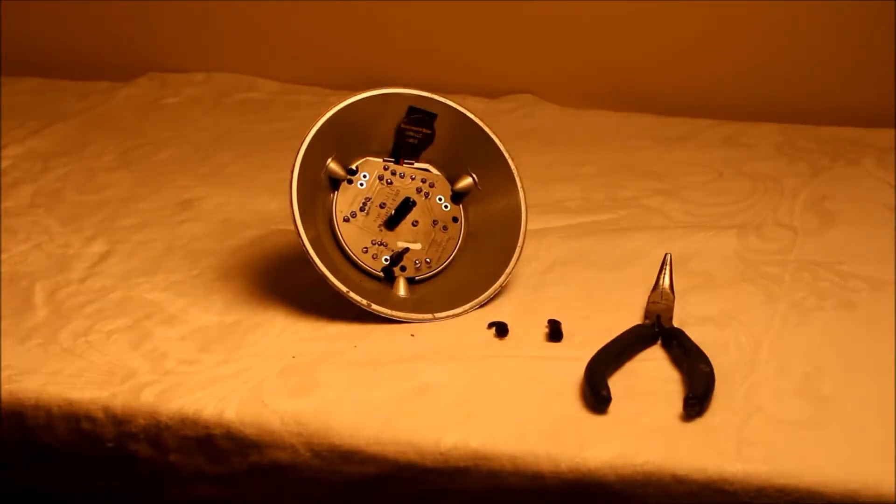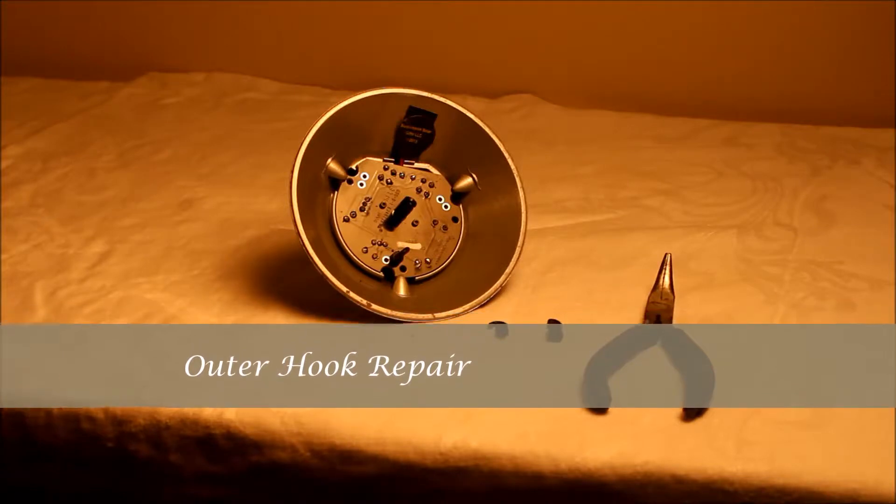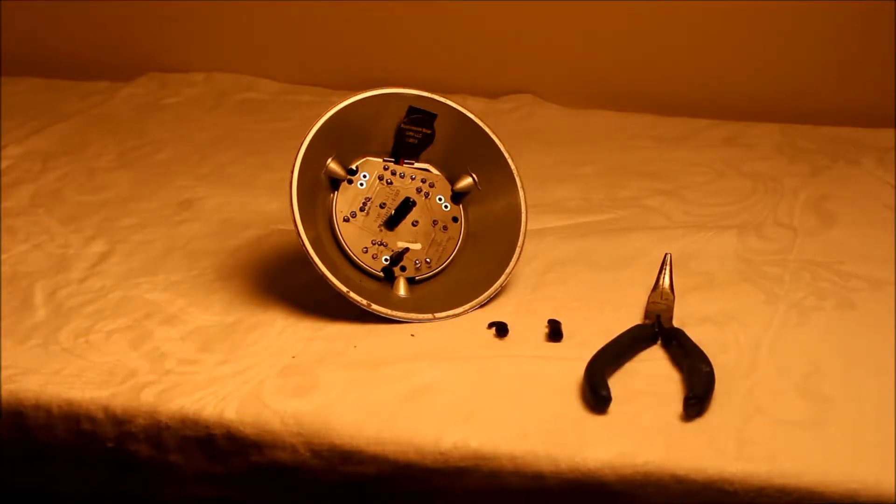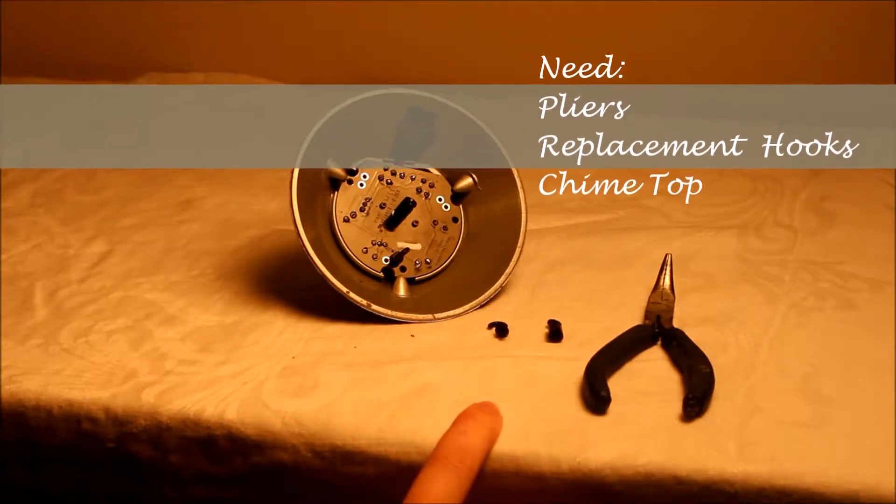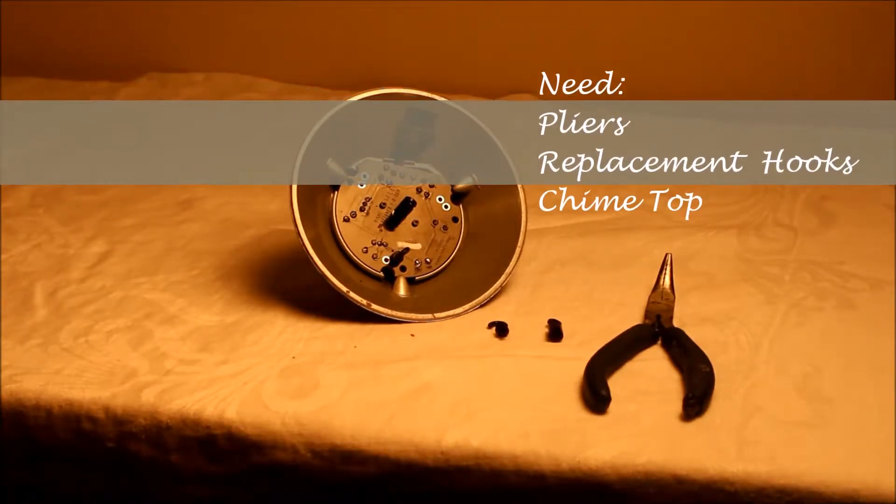In this video we will replace the outer hook of a Sunblossom Solar Gift. In order to do this you will need a set of pliers, the hooks that we sent you to replace it, and the top to your Sunblossom Solar Gift.